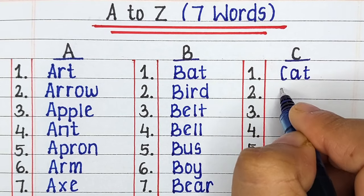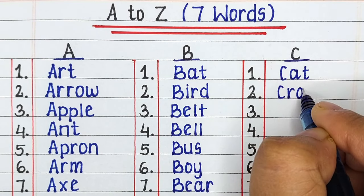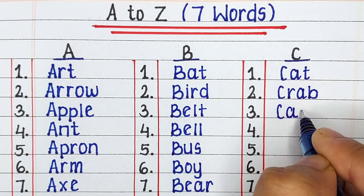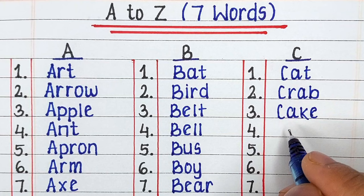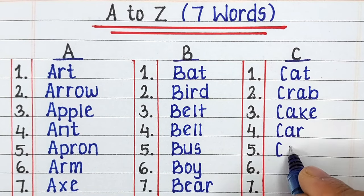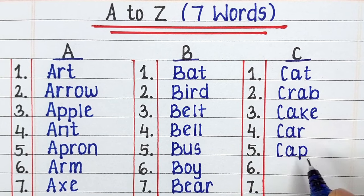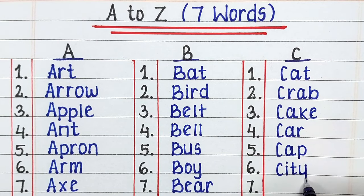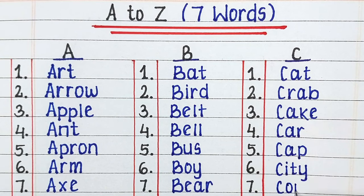Next is Alphabet C. The words starting from alphabet C are Cat, Crab, Cake, Car, Cap, City and Cone.